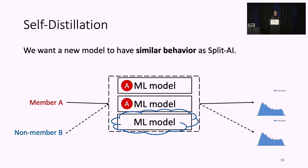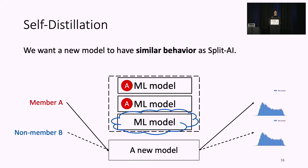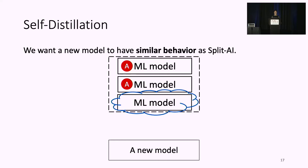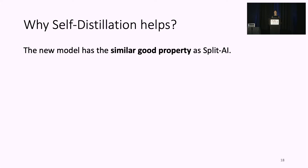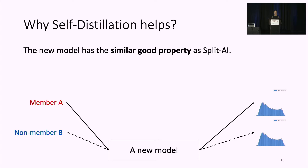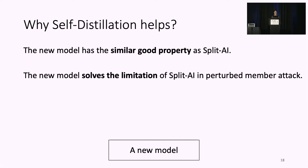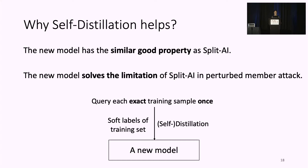We already have Splitter-I, which behaves similarly on members and non-members from a direct single-query attack perspective, and we want a new model to inherit this property. To do this, we consider distillation by training a new model using the soft labels of the training set. Since we are using the exact same training set, we call this process self-distillation. After distillation, we remove Splitter-I and the soft labels and only allow queries to this new final model. The transferability of neural networks enables the new model to have similar good properties as Splitter-I, behaving similarly on members and non-members from a direct single-query attack perspective. Moreover, the new model also solves the limitation of Splitter-I against the perturbed member attack, since during distillation we only query each exact training sample once, and the attacker can only query the final model without interacting with the distillation process.